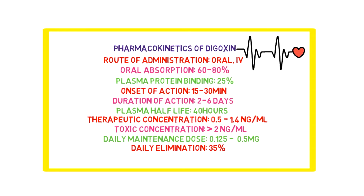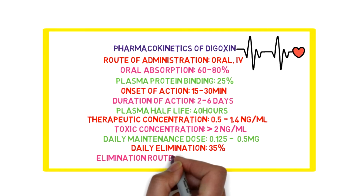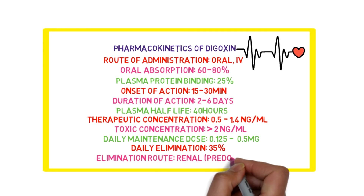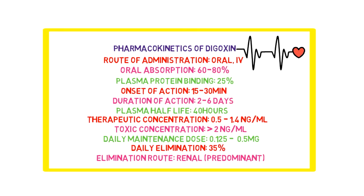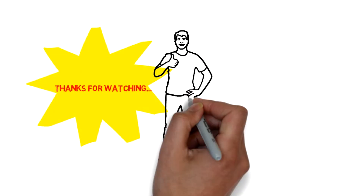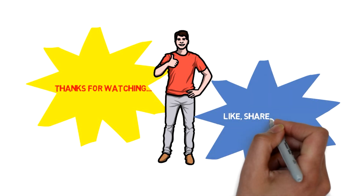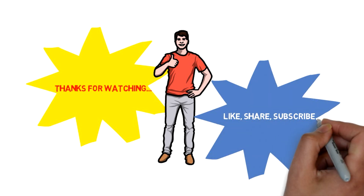The daily elimination is 35 percent, and it is the fraction of the total amount present in the body. The predominant elimination route is renal. That's it — thanks for watching. If you liked the video, don't forget to like, share, and subscribe.